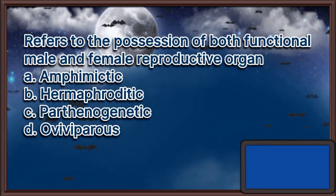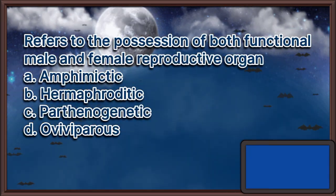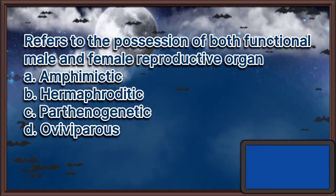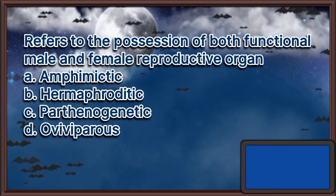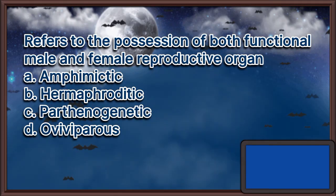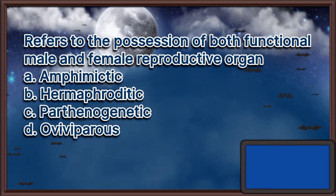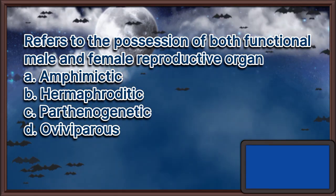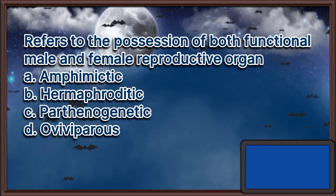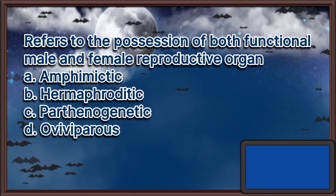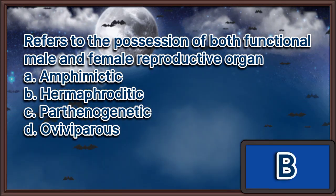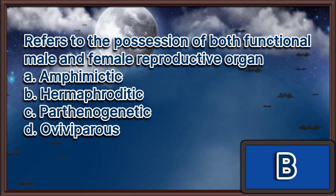Refers to the possession of both functional male and female reproductive organs. A. Amphimictic. B. Hermaphroditic. C. Parthenogenetic. D. Ovoviviparous. The answer is letter B.